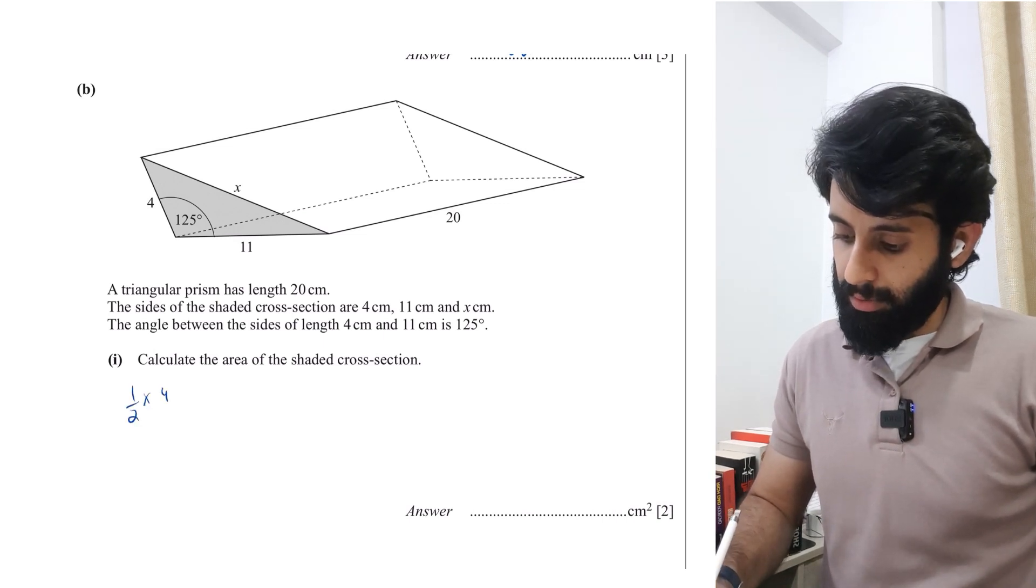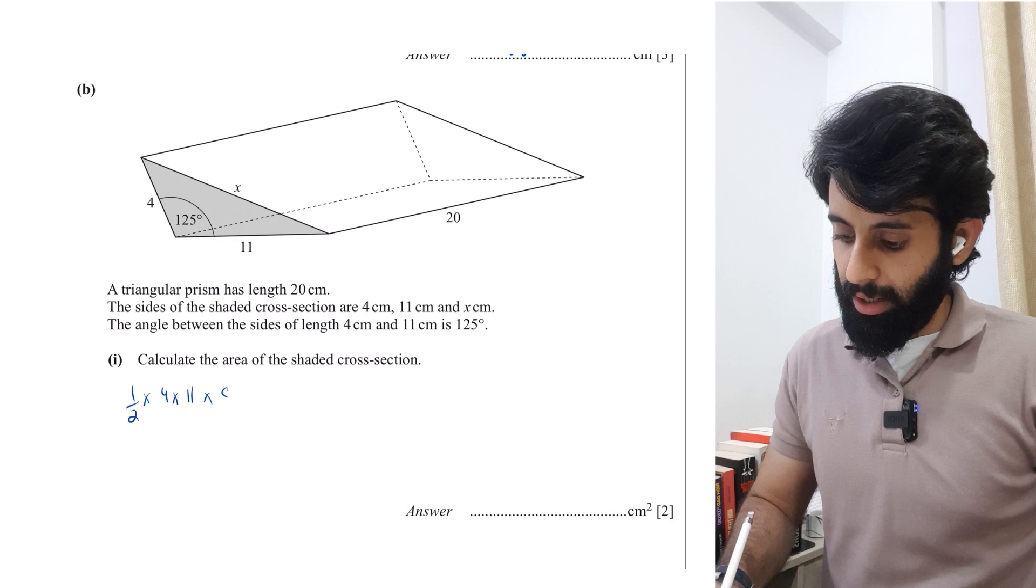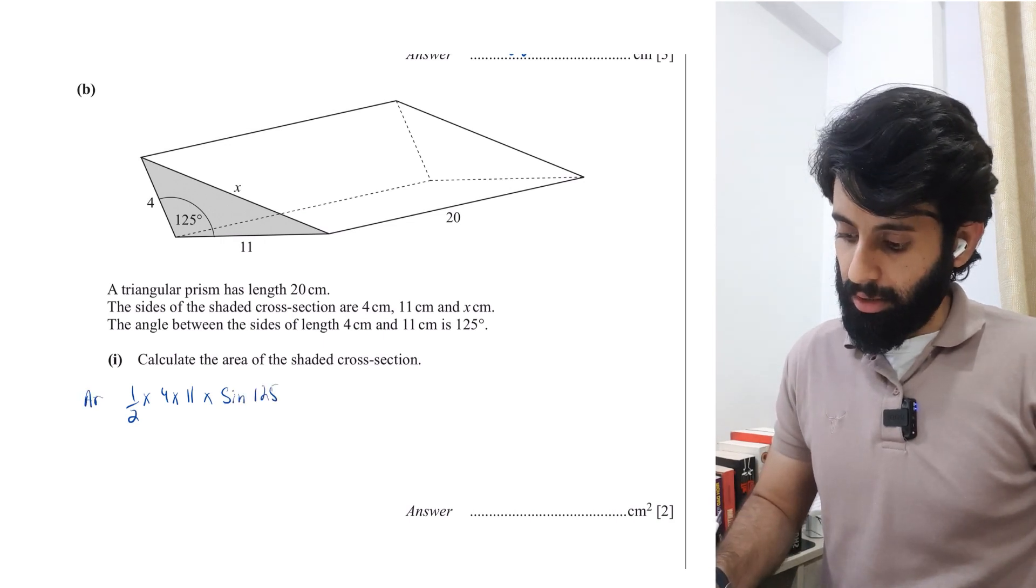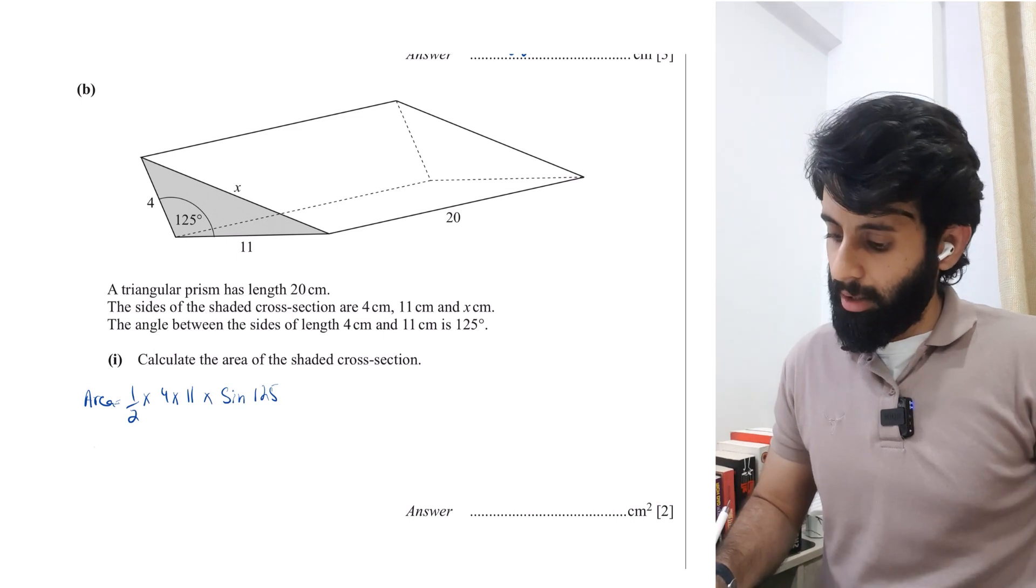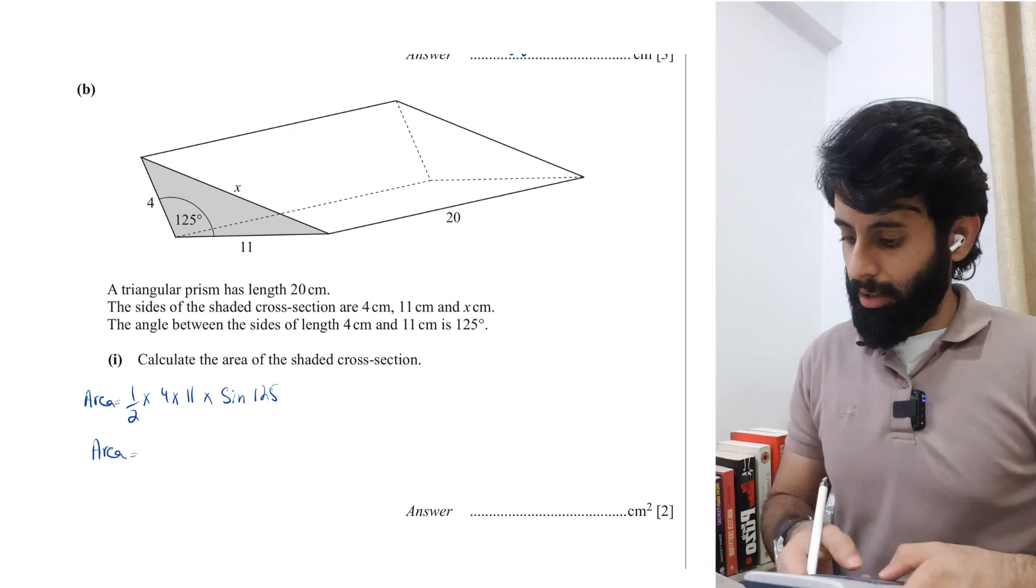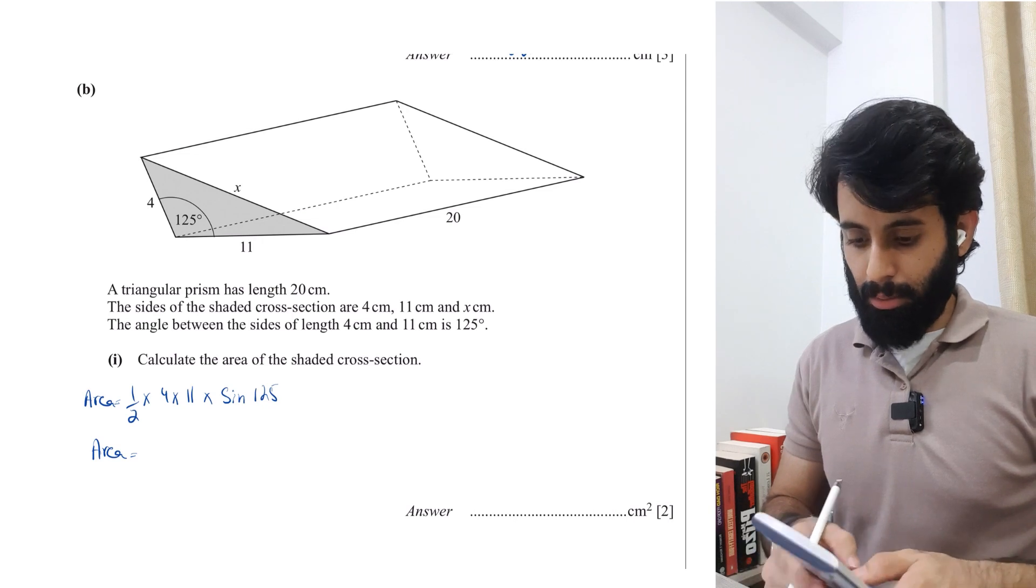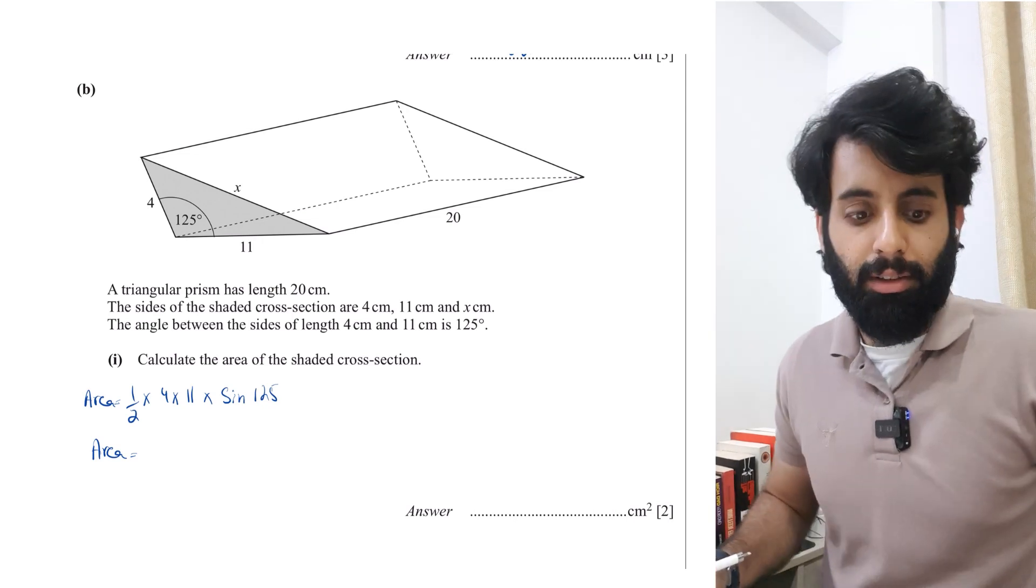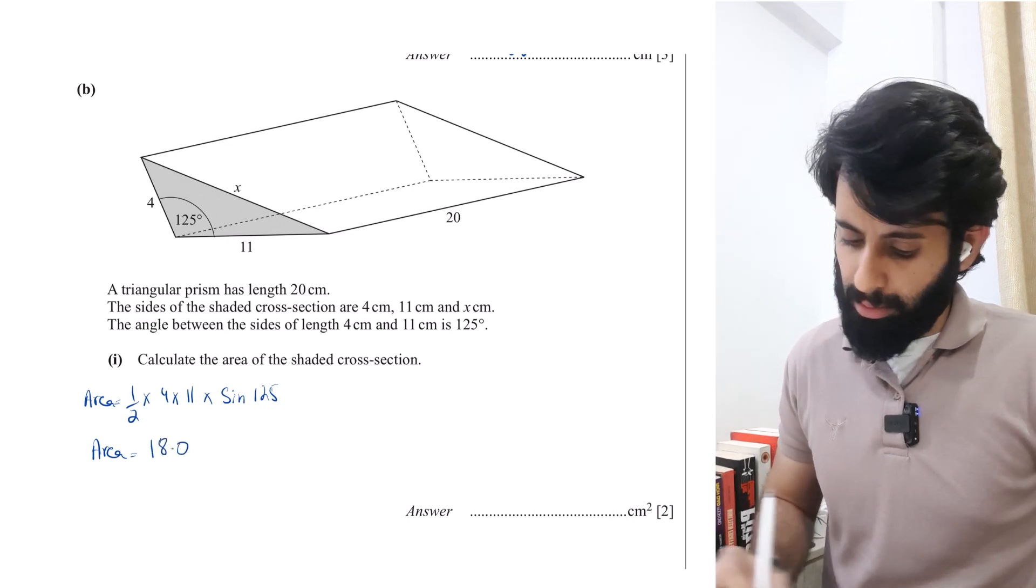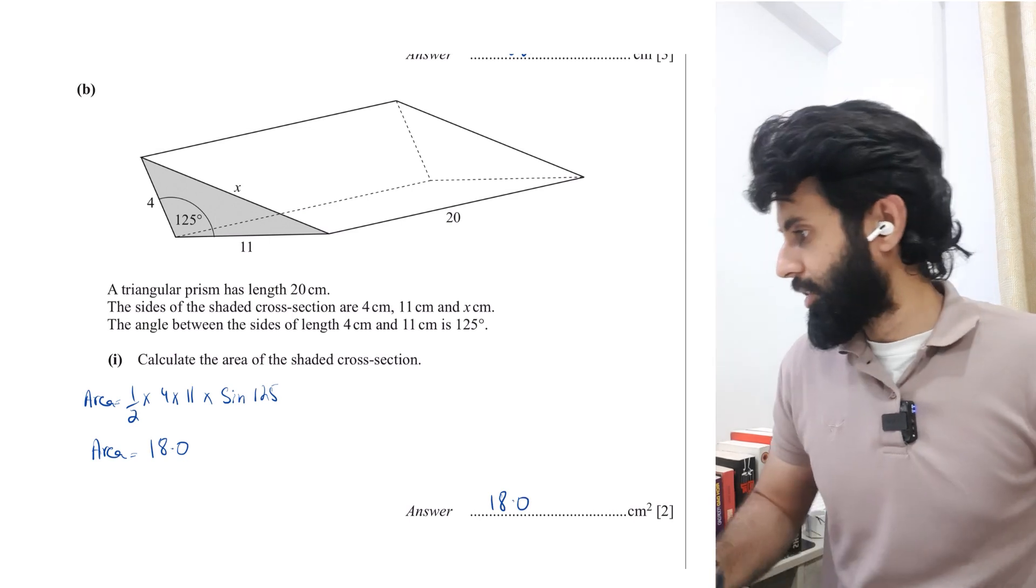This shouldn't be too hard. Half ab sine C is the formula that I'm going to use because you have two sides and an included angle. I have a video on this you guys can check out if this is something you're not familiar with. Usually you'll find questions of mensuration mixed up with further trigonometry, so very important. Area equals 18.02, so I'm going to log this at 18.0, which is the correct answer.